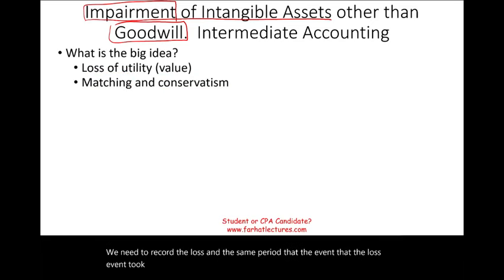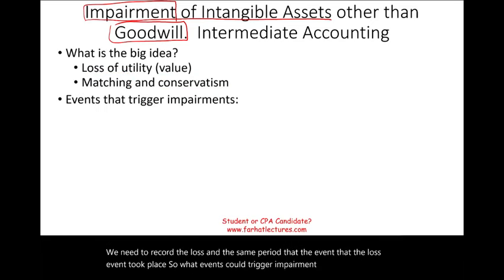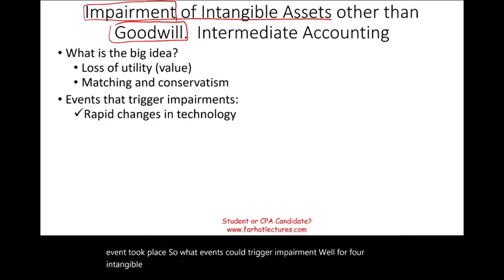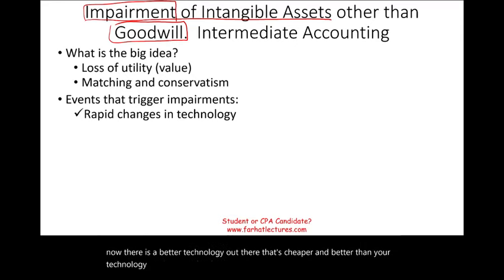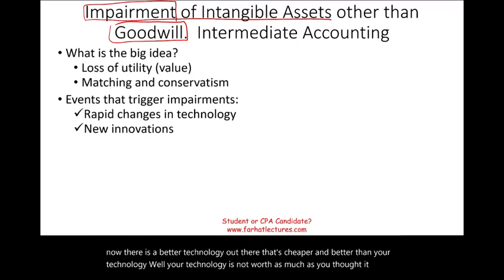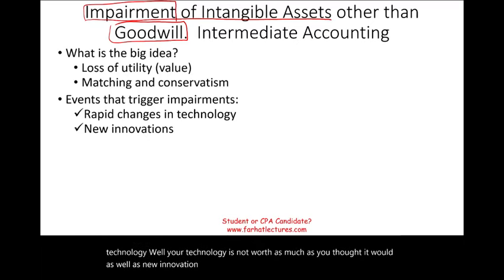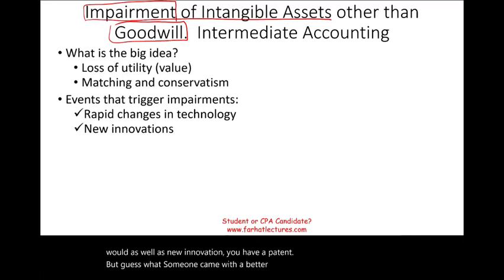What events could trigger impairment for an intangible asset? Maybe rapid changes in technology — you had a technology but now there's a better, cheaper one out there, so yours isn't worth as much. Also new innovation: you have a patent, but someone came up with a better, cheaper patent, and now your patent is worthless.